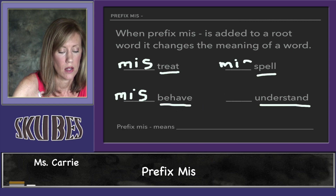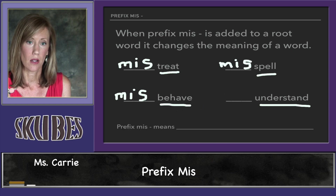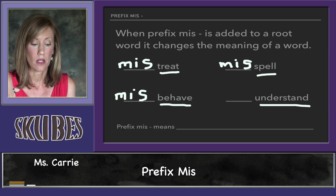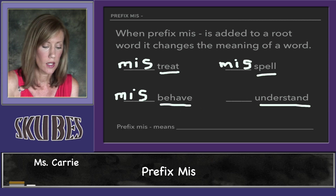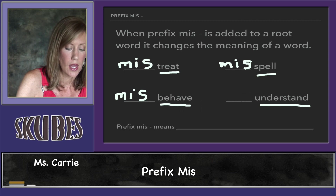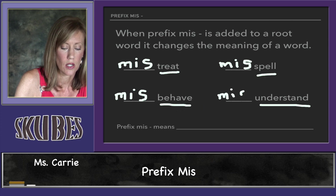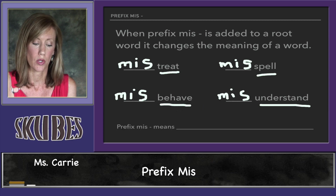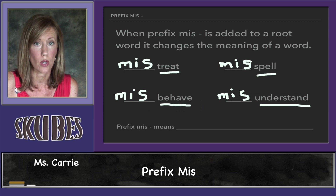If we put the prefix 'mis' in front of the word 'spell,' it becomes 'misspell,' and 'misspell' means to spell a word incorrectly. And if we put the prefix 'mis' in front of 'understand,' we get 'misunderstand,' which means to understand something the wrong way or to understand it incorrectly.